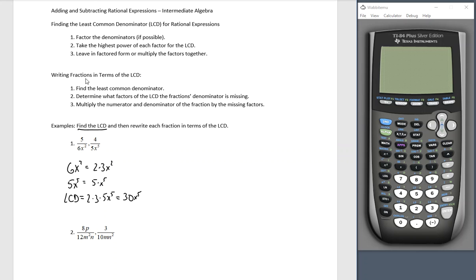Now what we're going to do with that is we're going to rewrite our fractions in terms of the LCD. So first we found it. Find the least common denominator. And then we're going to determine what factors of the LCD the fractions denominator is missing. Multiply the numerator and denominator by the missing factors. So 5 over 6x squared. I need to figure out what goes here if I want 30x to the fifth. Find the least common denominator 30x to the fifth.